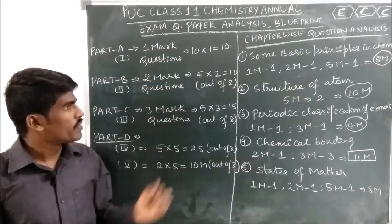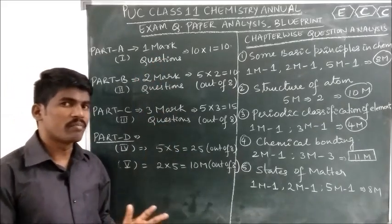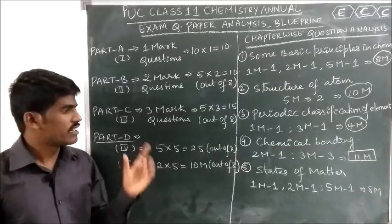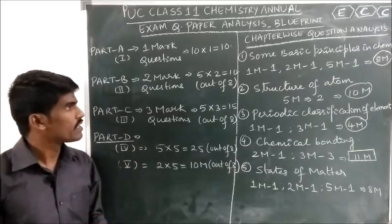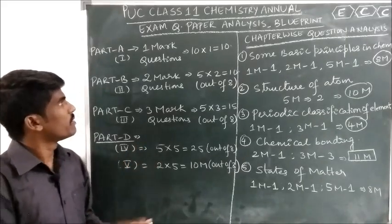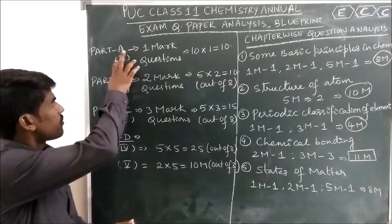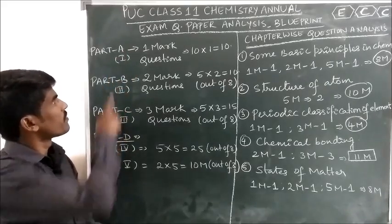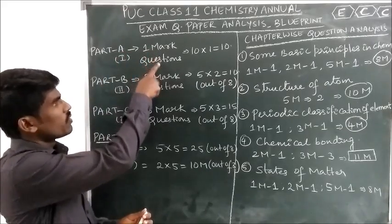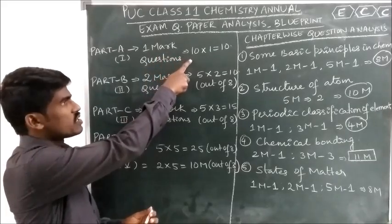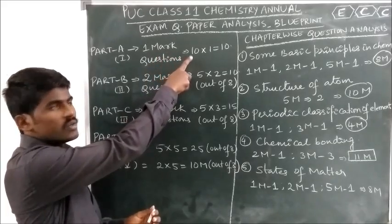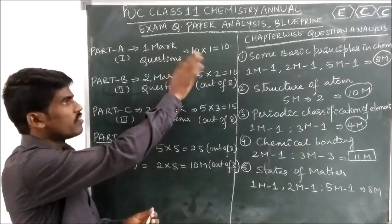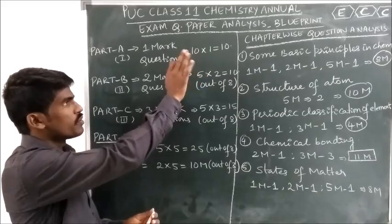This Chemistry question paper comprises 70 marks, and 30 marks is for Practical. In the 70 marks, there are 4 sections: Part A, Part B, Part C, and Part D. Part A is 1-mark questions — 10 questions will be there and you need to attempt all 10. All are compulsory; there is no choice.